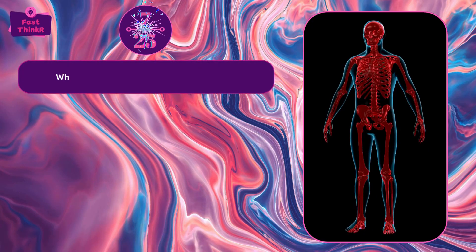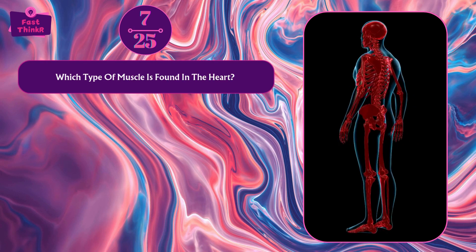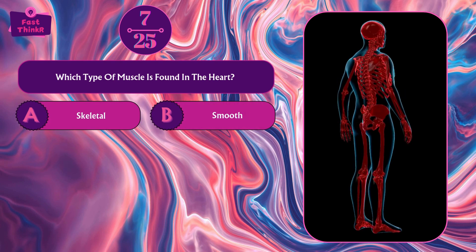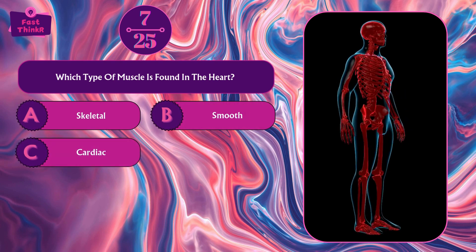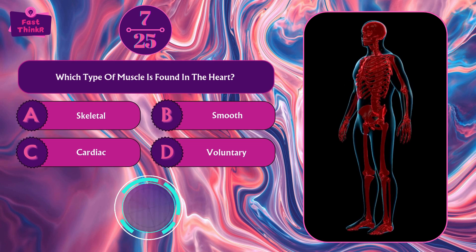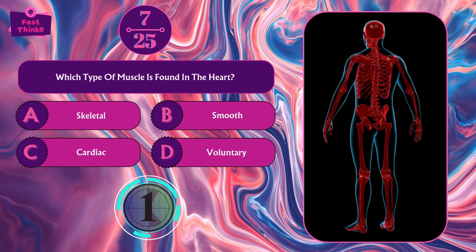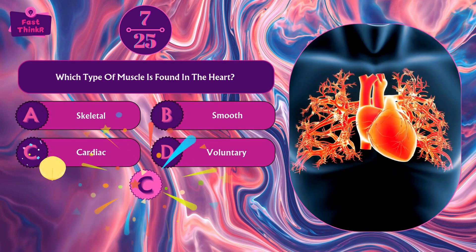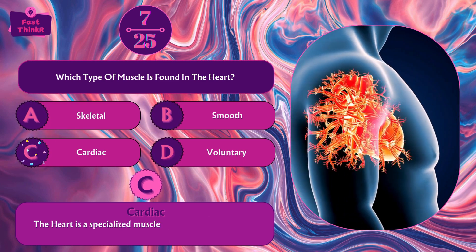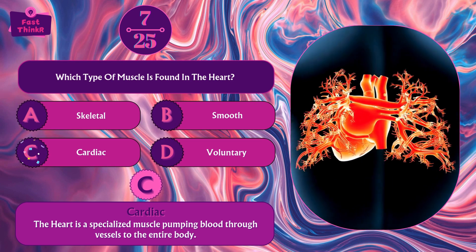Which type of muscle is found in the heart? Skeletal, smooth, cardiac, or voluntary? Option C — cardiac. The heart is a specialized cardiac muscle pumping blood through vessels to the entire body.